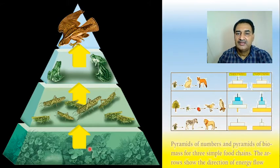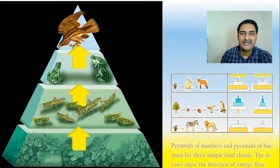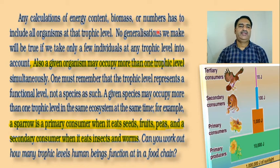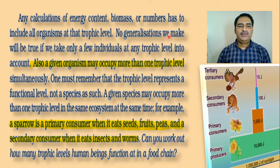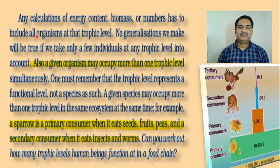Why can't it be inverted for energy? Because of the 10% law — Lindeman's law — and the laws of thermodynamics that you studied earlier. That is why the energy pyramid will always be upright. Any calculation of energy content, biomass, or number has to include all organisms at that trophic level.